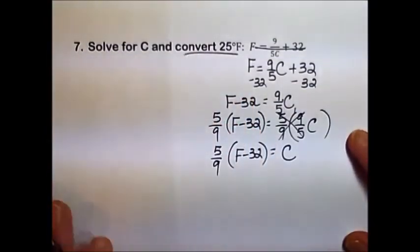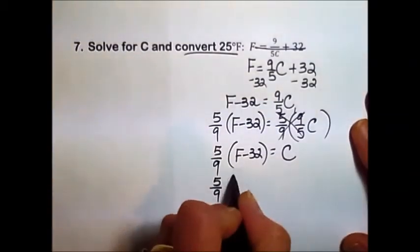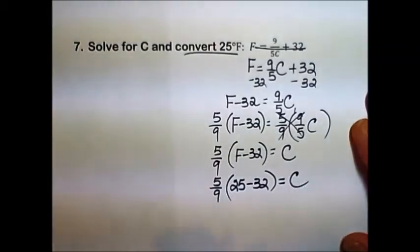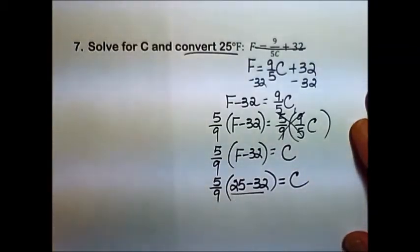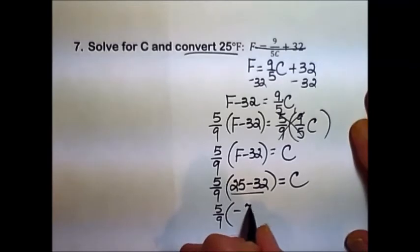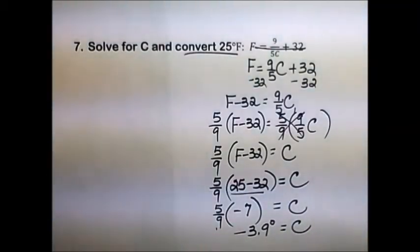And that's the second part of this problem, convert 25 degrees Fahrenheit. So we'll take our 5 ninths, replace f with 25, and simplify the problem. 25 minus 32, our first priority because of the parentheses. We'll subtract, leaving us with a negative 7. And the last thing would be to multiply our fraction times the quantity inside the parentheses. If we round this to the nearest tenth, we end up with a negative 3.9 degrees Celsius would be equivalent to the 25 degrees Fahrenheit that was originally given.